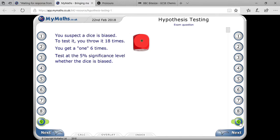Here you are seeing an exam question with respect to hypothesis testing. They are saying that you suspect a dice is biased. To test it, you throw it 18 times. You get a one six times. Test at the five percent significance level whether that dice is biased or not.